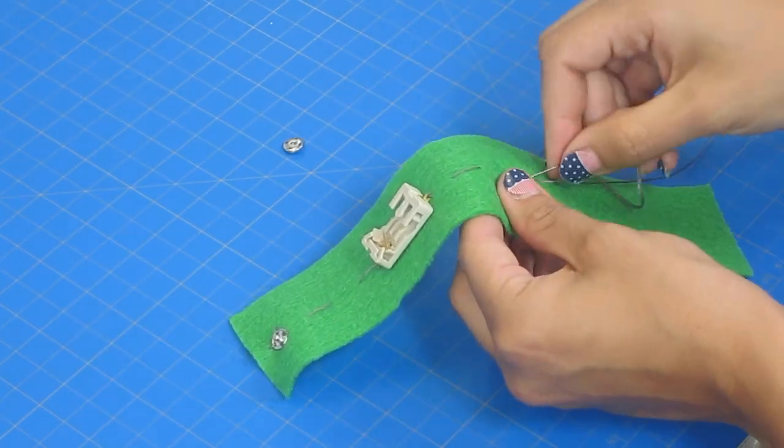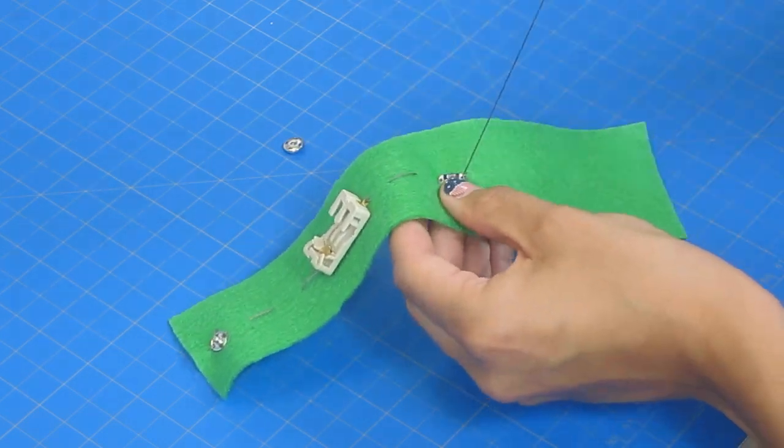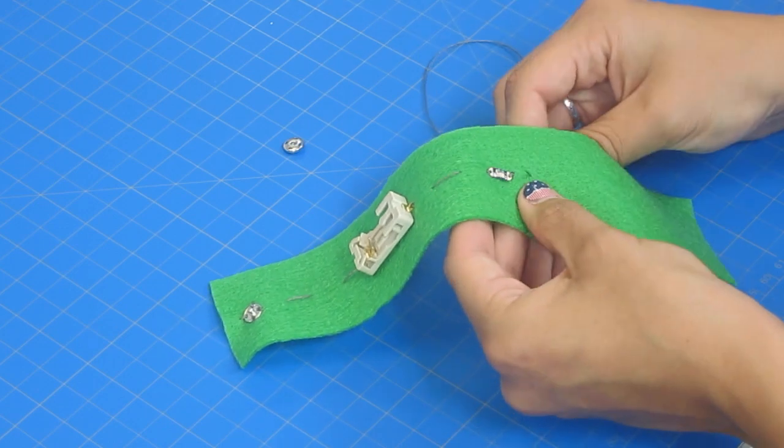Using new conductive thread you will secure the negative end of the LED and sew towards the end of the bracelet.